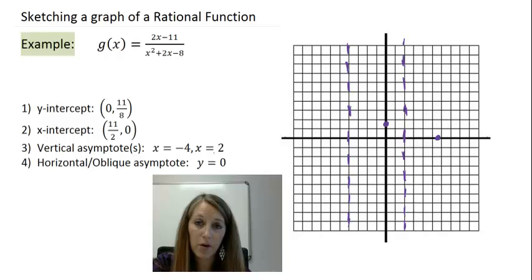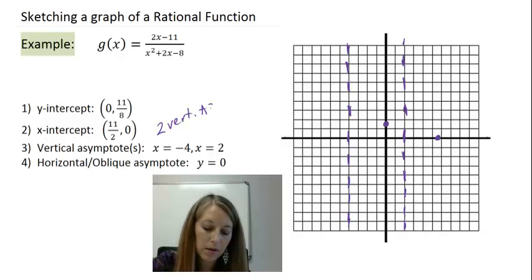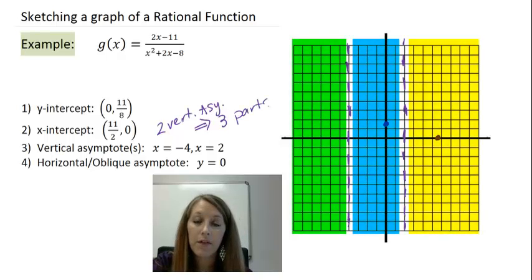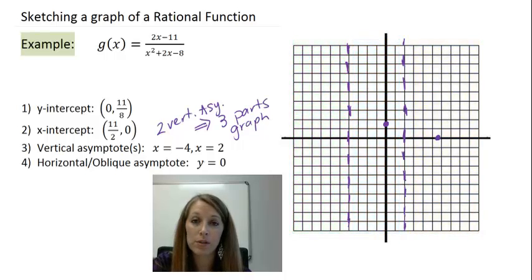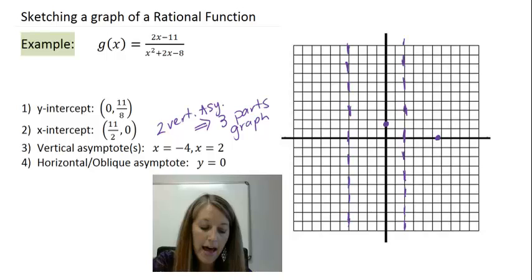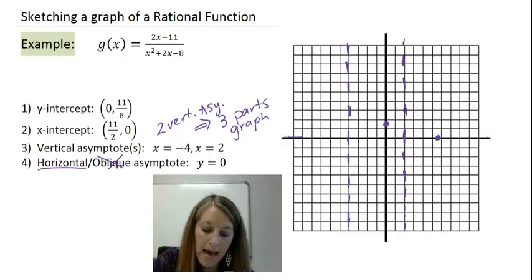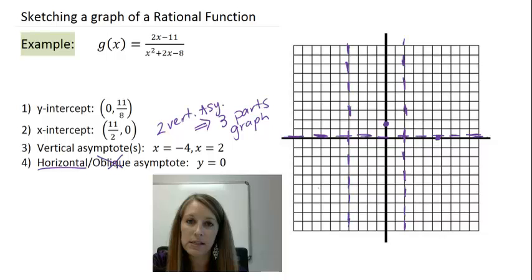Since I have two vertical asymptotes, remember that gives me one extra part to the graph. Two vertical asymptotes tells me I should have three parts to the graph. If you don't have three parts to the graph, that means you're missing something, and you need to go back and double-check what's going on. The last is we have a horizontal asymptote at y equals zero. This is exactly on our x-axis, which is kind of hard to draw, so I try and draw it as close as I can, but still visually that I can see it.